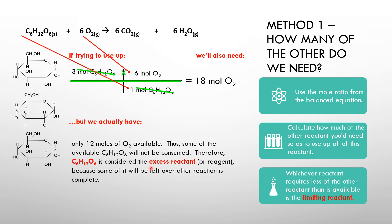We have three moles of glucose; to react it completely we'd need 18 moles of oxygen, but we only have 12 moles. So we clearly can't react all the glucose — glucose is not going to run out first, it will be in excess. In this method, we use the mole ratio from the balanced equation to calculate how much of the other reactant we'd need. Whichever reactant requires more of the other reactant than is available is NOT the limiting reactant.